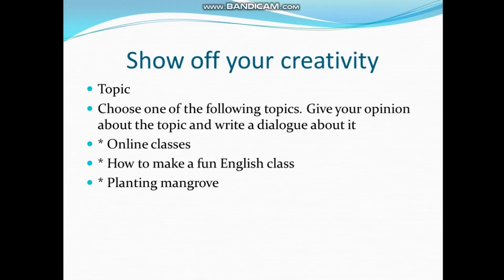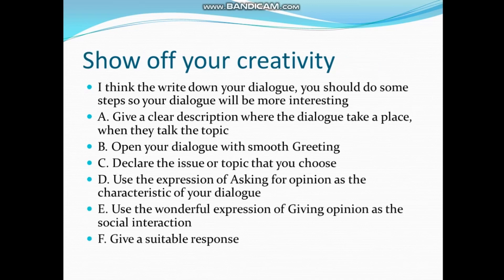Writing task: choose one of the following topics — online classes, how to make a fun English class, or planting mangrove. Give your opinion about the topic and write a dialogue about it. Steps for writing a good dialogue: A. Give a clear description of where the dialogue takes place and when they talk about the topic. B. Open your dialogue with a smooth greeting. C. Declare the issue or topic that you choose. D. Use the expression of asking for opinion as the characteristic of your dialogue. E. Use the expression of giving opinion as the social interaction. F. Give a suitable response.